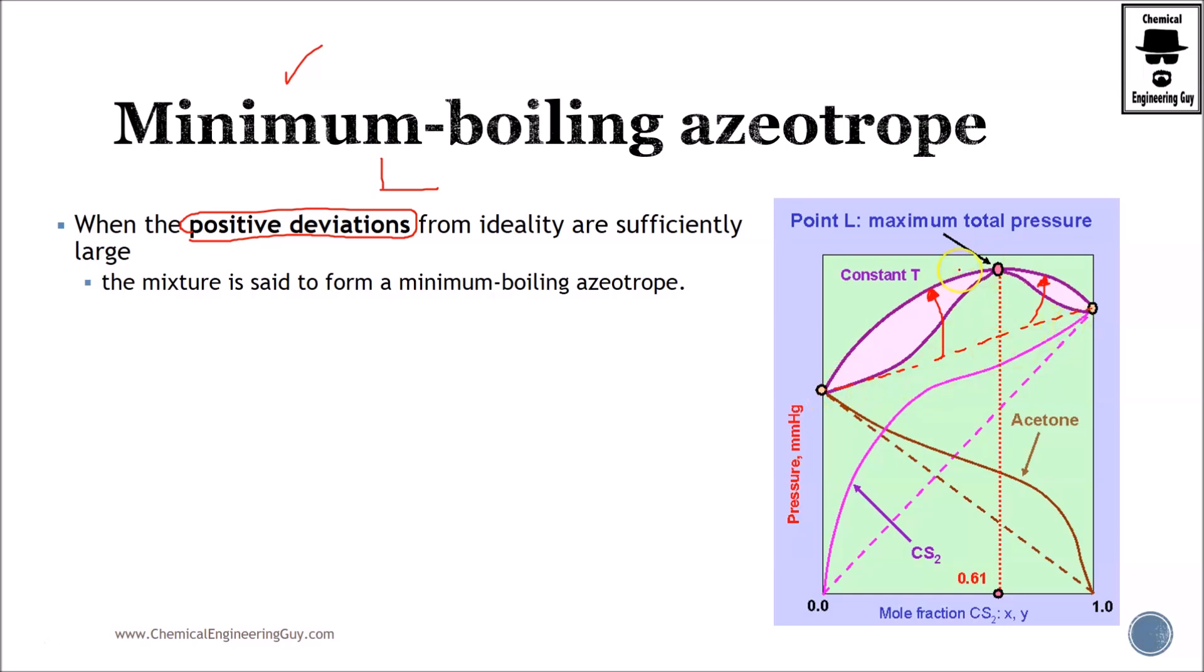So as you can see, we have no problems. So probably you're wondering why do we call this a minimum boiling azeotrope point if we have a maximum point right here?